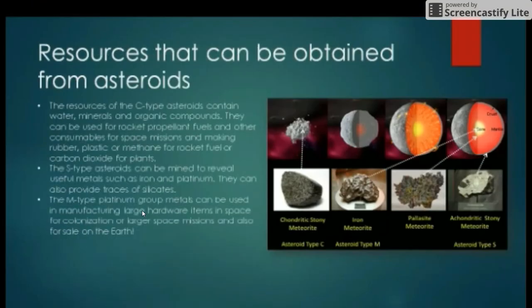Resources that can be obtained from asteroids: The C type asteroids contain water, minerals, and organic compounds. They can be used for rocket propellant fuels and other consumables for space missions, and for making rubber, plastic, or methane for rocket fuel, or carbon dioxide for plants. The S type asteroids can be mined to reveal useful metals such as iron and platinum, and can also provide traces of silicates. The M type platinum group metals can be used in manufacturing large hardware items in space for colonization or large space missions, and also for sale on Earth.